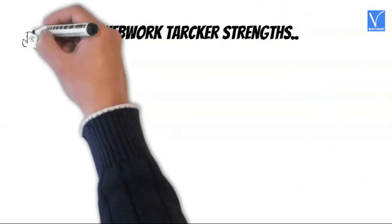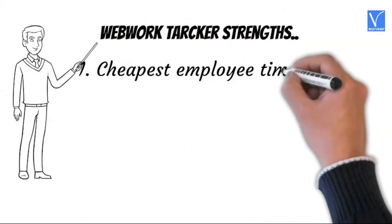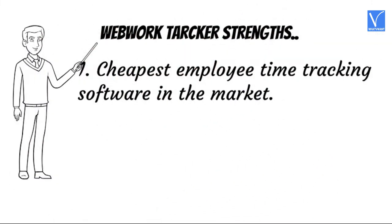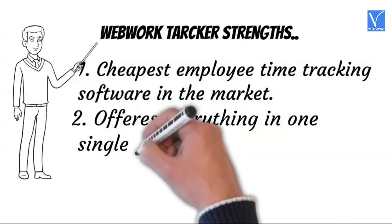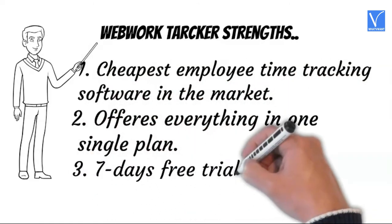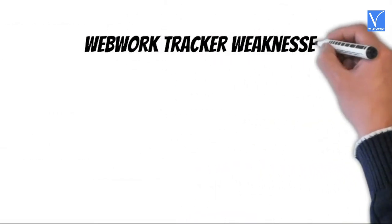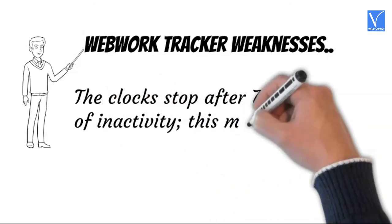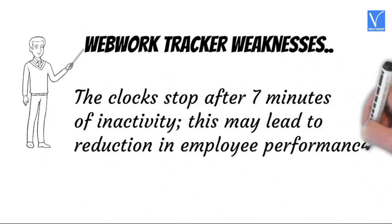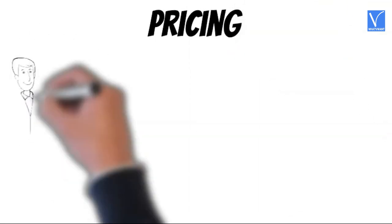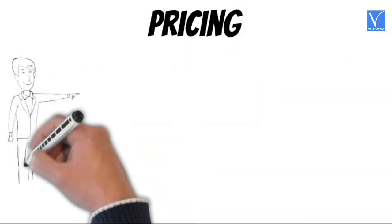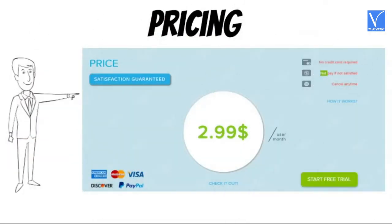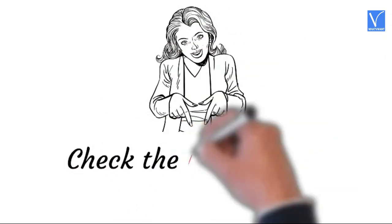WebWork Time Tracker strengths: cheapest employee time tracking software in the market, offers everything in one single plan, and 7 days free trial available. WebWork Time Tracker weaknesses: the clock stops after 7 minutes of inactivity, which may lead to a reduction in employee performance. WebWork Tracker has only one plan starting from $2.99 per user per month, including all features. Check the description for the product link.